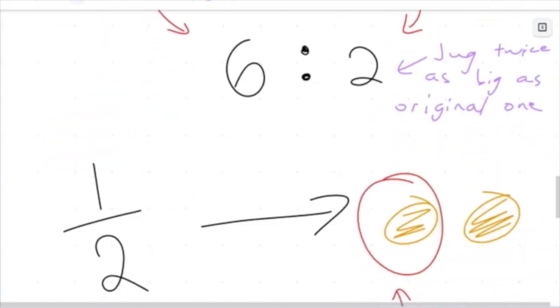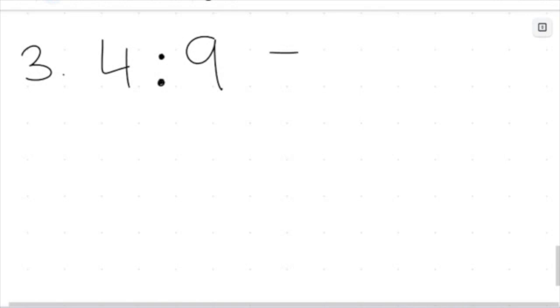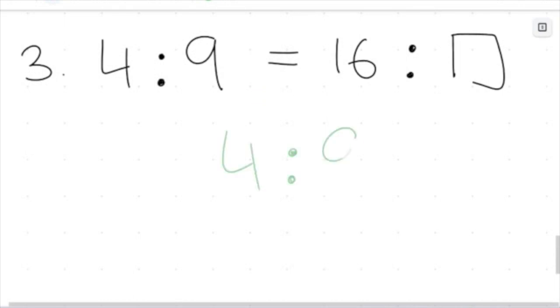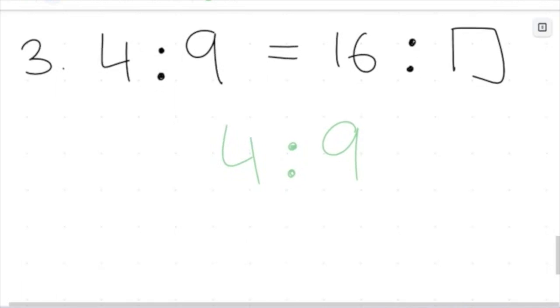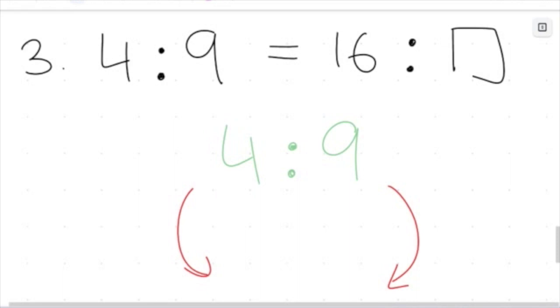Let's apply this to a couple of questions. For question three, I have a ratio of 4 to 9, and that's going to be the same as writing 16 to something unknown. Let's think about how we'd approach this. I have a ratio of 4 to 9 and I want an equivalent ratio — something must have been done to both numbers.